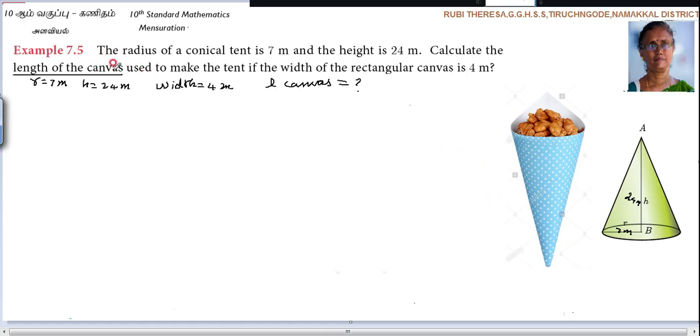They are making this rectangular canvas into a conical tent. That means curved surface area of a cone is equal to area of a canvas. Do you follow? Rectangular canvas is CSA of a cone. CSA of a cone is nothing but pi R L. Curved surface area of a cone is the area of a canvas.